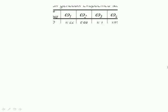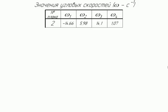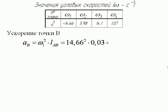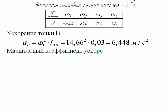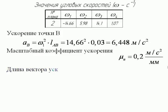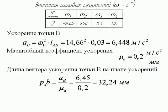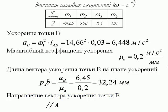Для определения нормальных составляющих ускорений нам необходимы значения угловых скоростей звеньев. Из курса школьной физики мы знаем, что если точка движется с постоянной угловой скоростью по дуге окружности, то её ускорение определяется следующим образом. В нашем случае оно равно 6,448 м/с². Примем масштабный коэффициент ускорения равным 0,2 м/с² на миллиметр. Тогда длина вектора ускорения точки B на плане ускорений будет 32,24 мм. Этот вектор параллелен кривошипу AB и направлен от точки B к точке A.